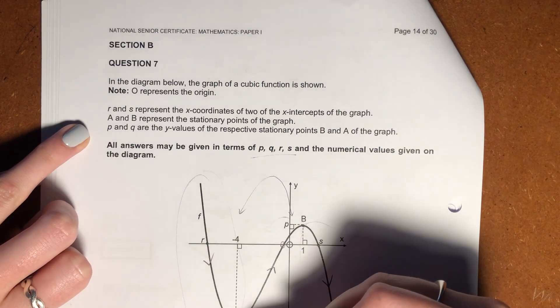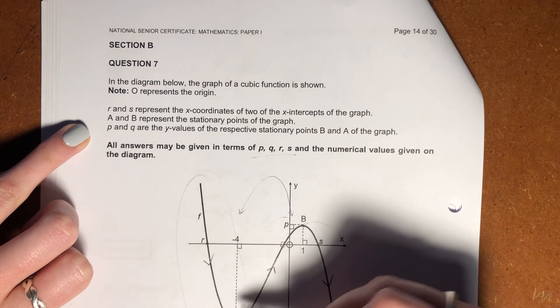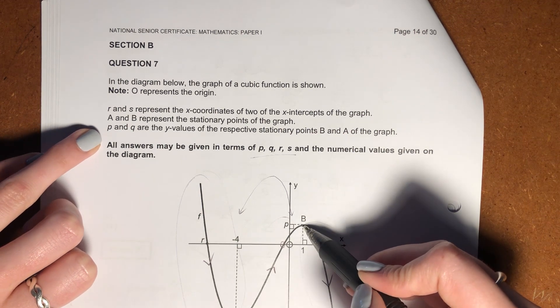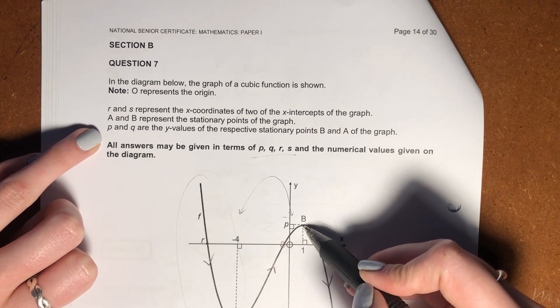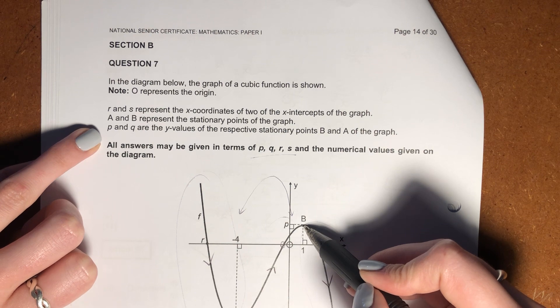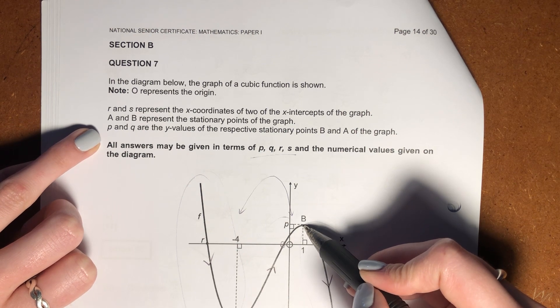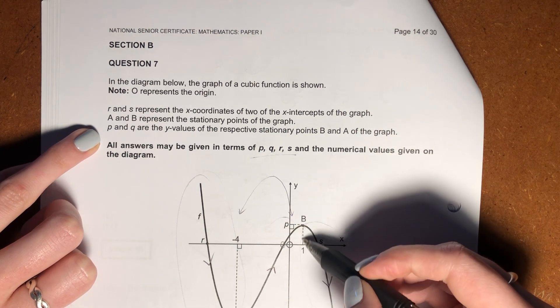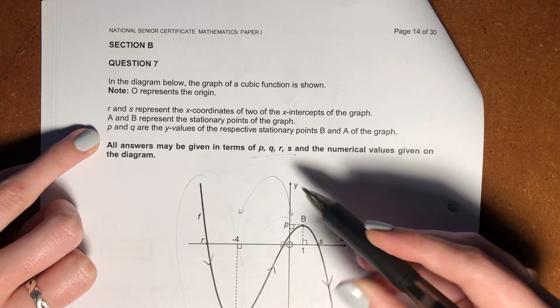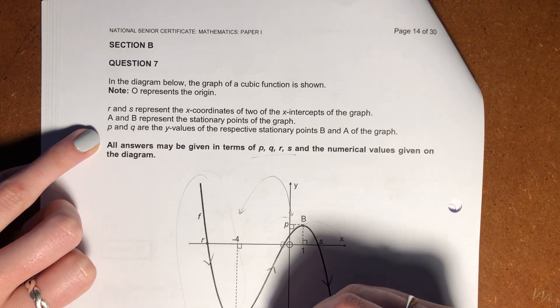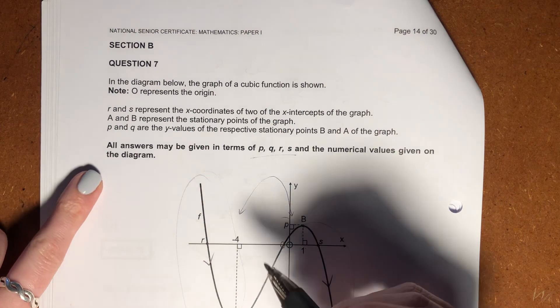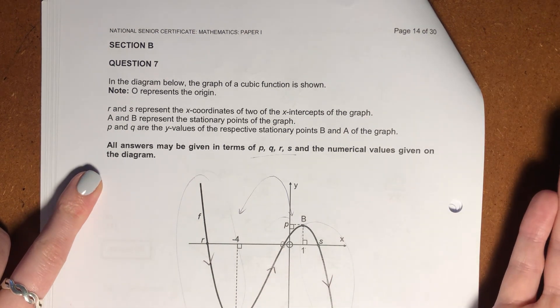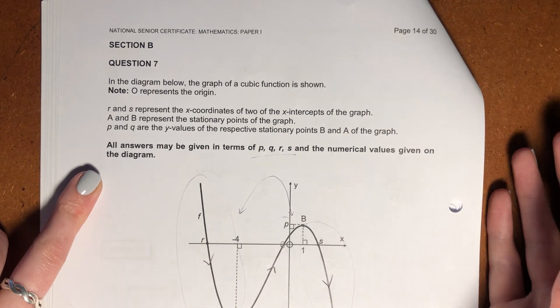A and B represent stationary points of the graph. And then it says P and Q are the y-values of the respective stationary points B and A of the graph. So basically, P and 1 give us the coordinates of B, and Q and negative 4 give us the coordinates of A. It says all answers can be written in terms of these variables and the numerical values given.